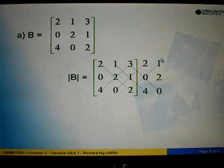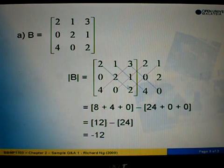So from here, we multiply all these elements first. 2 times 2 times 2 equals 8. 1 times 1 times 4 equals 4. 3 times 0 times 0 equals 0. Then we minus the other elements here. 4 times 2, 8. 8 times 3, 24. 0 times 1 times 2 equals 0. 2 times 0 times 1 equals 0.